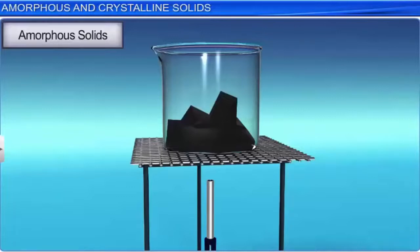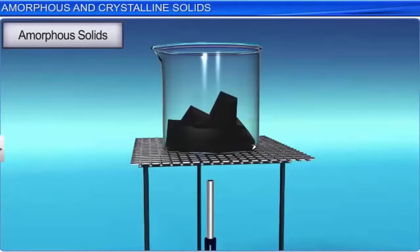A crystalline solid has a sharp melting point; when it reaches its melting point, it immediately changes into liquid form. These are considered true solids. Amorphous solids do not have sharp melting points. These soften over a range of temperature and can be molded and blown into various shapes. These solids behave as crystalline at a certain temperature and are considered pseudo solids or supercooled liquids.